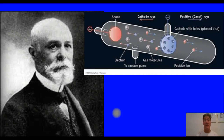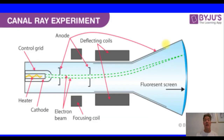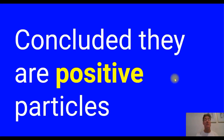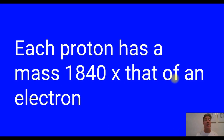A guy named Goldstein discovered this. Unlike cathode rays, which moved toward a positive electrode, he found that under certain conditions he could get rays moving in the opposite direction — moving through the canals, the pierces of a cathode, a negatively charged disc. He said these must be positively charged particles. This was in 1886, and he called them canal rays and concluded they must be positive particles — protons. Every proton has a mass 1840 times that of an electron, which is essentially the mass of hydrogen, because hydrogen is a single proton once you take away that one electron.